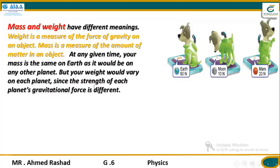The strength of each planet's gravitational force is different. So the same dog has the same mass on other planets, but different weights — measured in Newtons: 60 Newtons on Earth, 10 Newtons on the Moon, and 20 Newtons on Mars. The weight is different on each planet, but the mass stays the same.